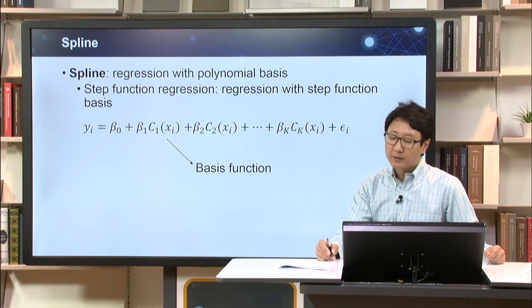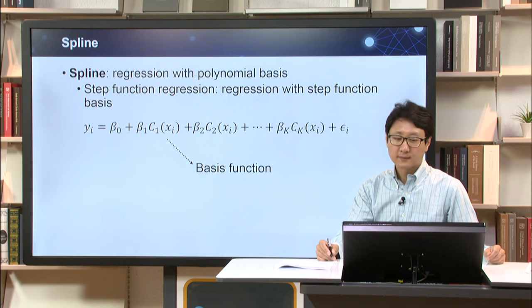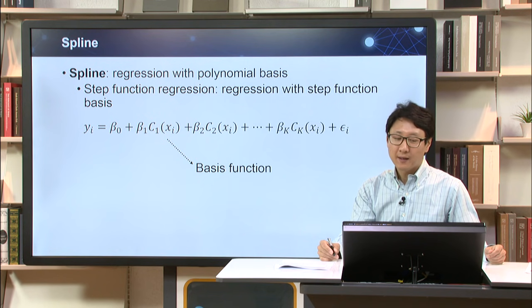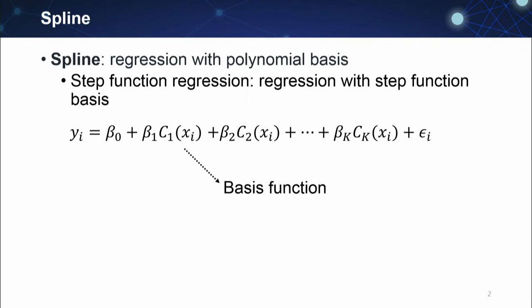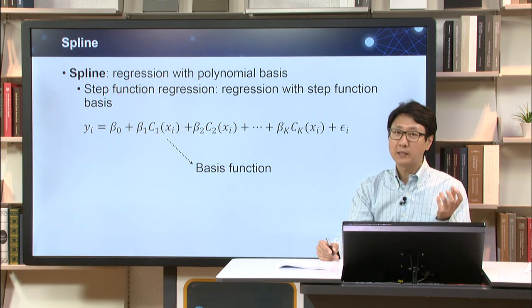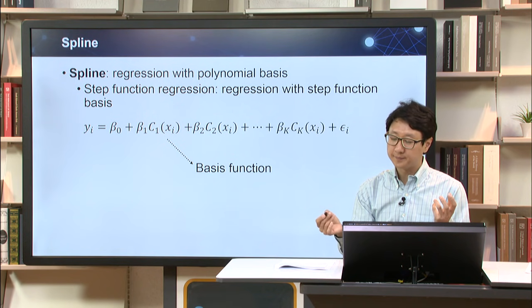Now I will introduce spline. Spline is a regression function with polynomial basis. It is very similar to step function regression. Step function regression uses step functions as a basis. Instead, spline uses polynomial functions as a basis function. So spline is kind of a polynomial regression plus step function regression.